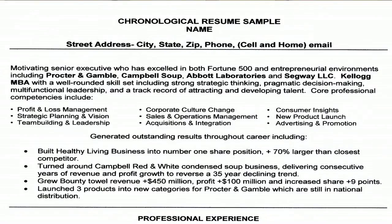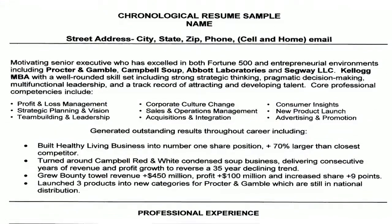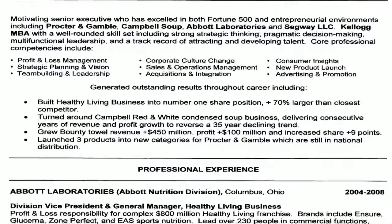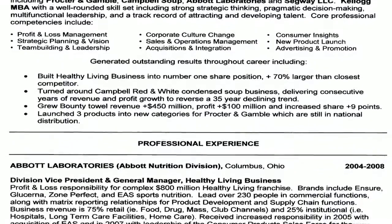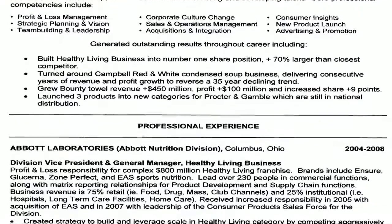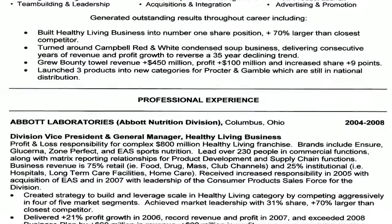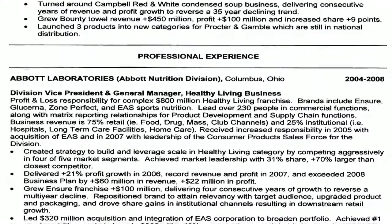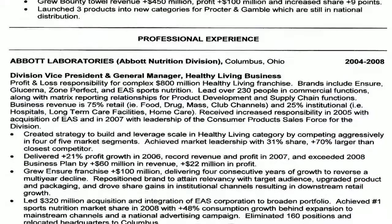A chronological resume is assumed to be reverse chronological. That means you give your work history with your most recent job at the beginning of the resume — usually the first thing underneath a summary paragraph about yourself and underneath your contact information: name, address, telephone number, and email. Starting with your most recent job, you include some description of your duties and responsibilities and then some specific accomplishments within that job.